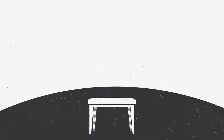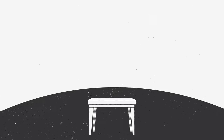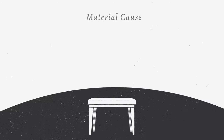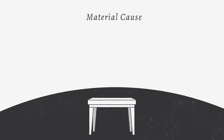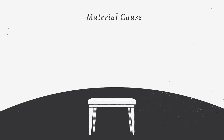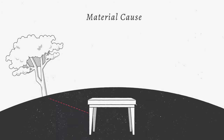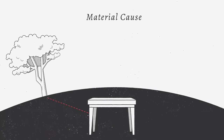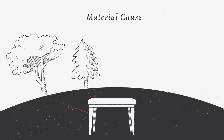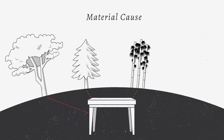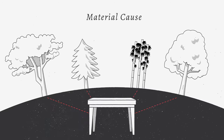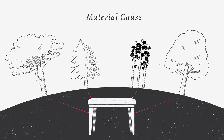The second answer to the question — why is the table this way — is the material cause of the table: wood. This might make a big difference in the quality and properties of the table. Mahogany is elegant, while pine is more basic. Bamboo is light, while oak is heavy and durable.